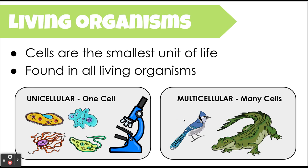In the example here we have a blue jay and a crocodile. Humans, for example, are multicellular — we have trillions and trillions of cells inside of our body that make us who we are. But cells alone are the smallest unit of life. We're going to talk about these cells, how to characterize and group them, and what actually makes up cells in this lesson today.